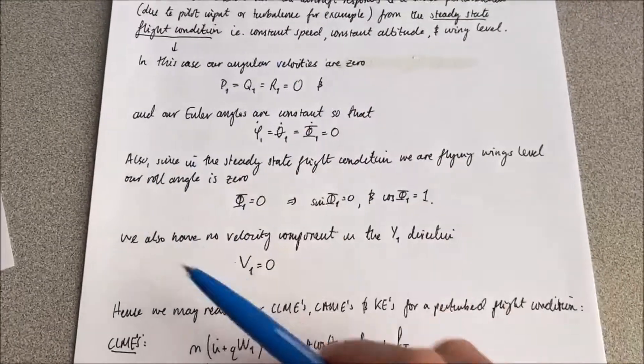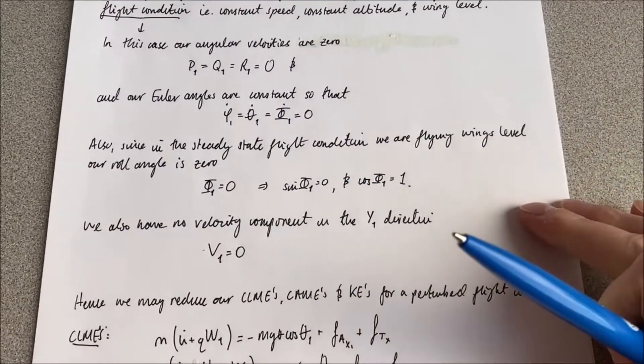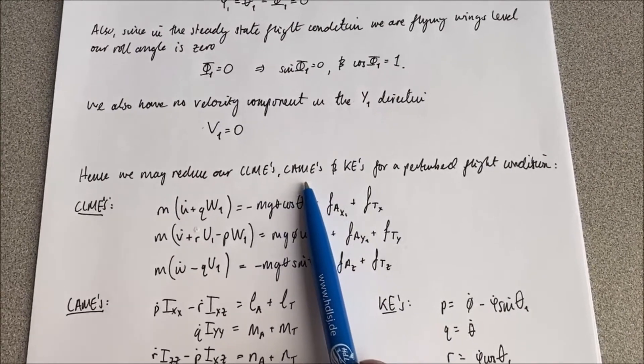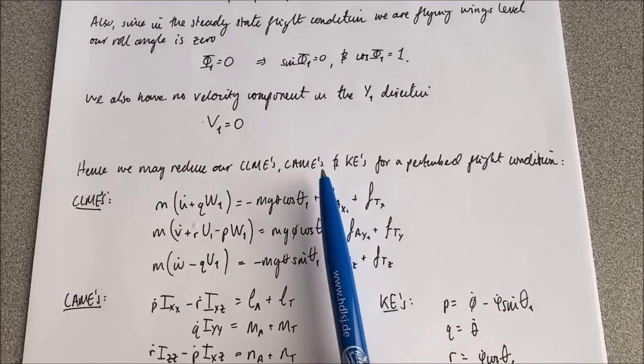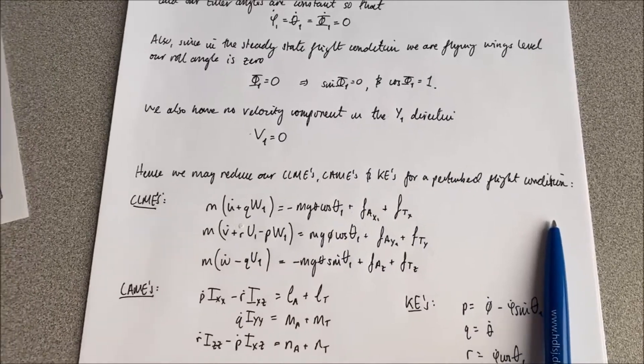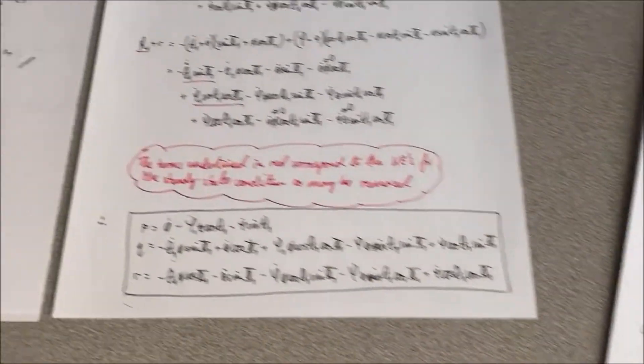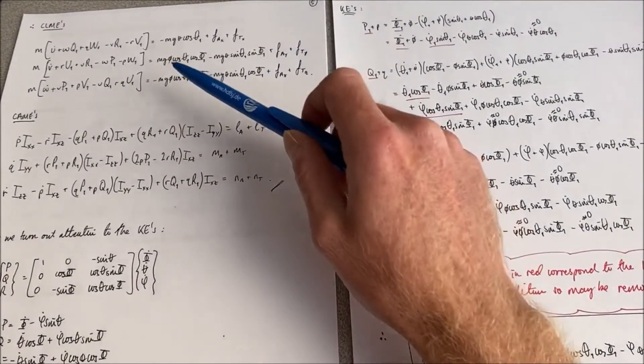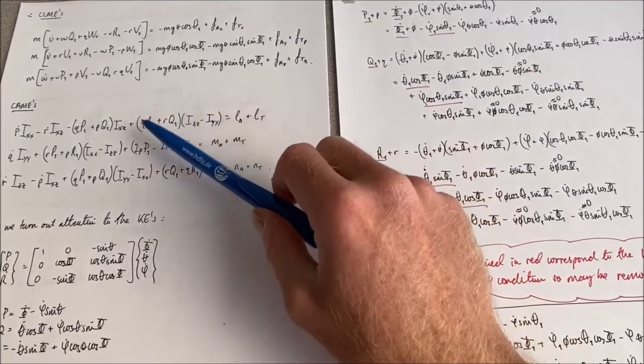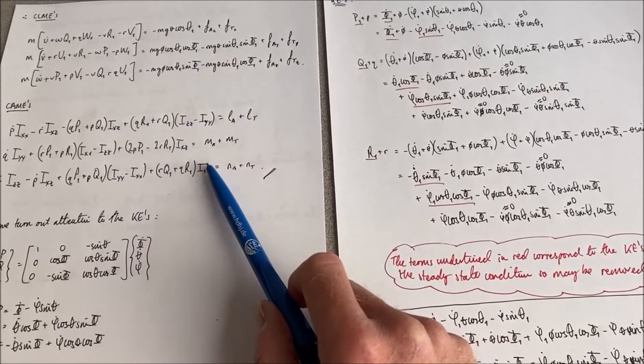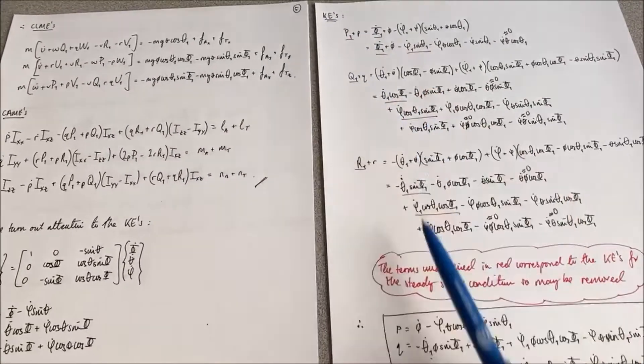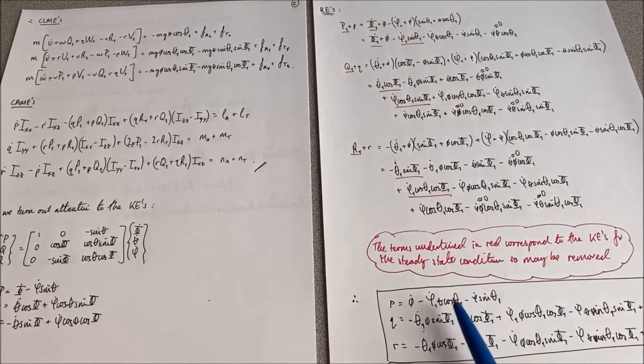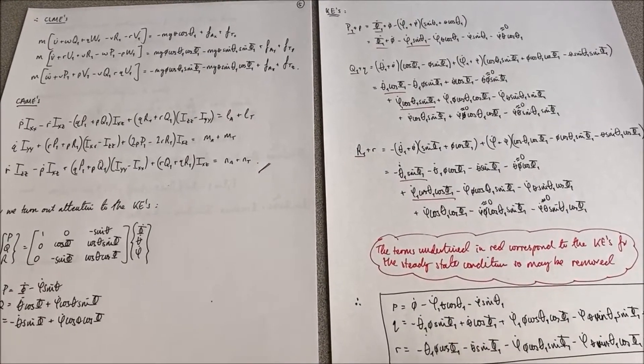What all of those assumptions mean is that we can reduce down our conservation of linear momentum equations, conservation of angular momentum equations, and the kinematic equations for the perturbed flight condition which we just derived. Remember back over here, these were our conservation of linear momentum equations and angular momentum equations for that perturbed flight condition, and these are the kinematic equations as well.